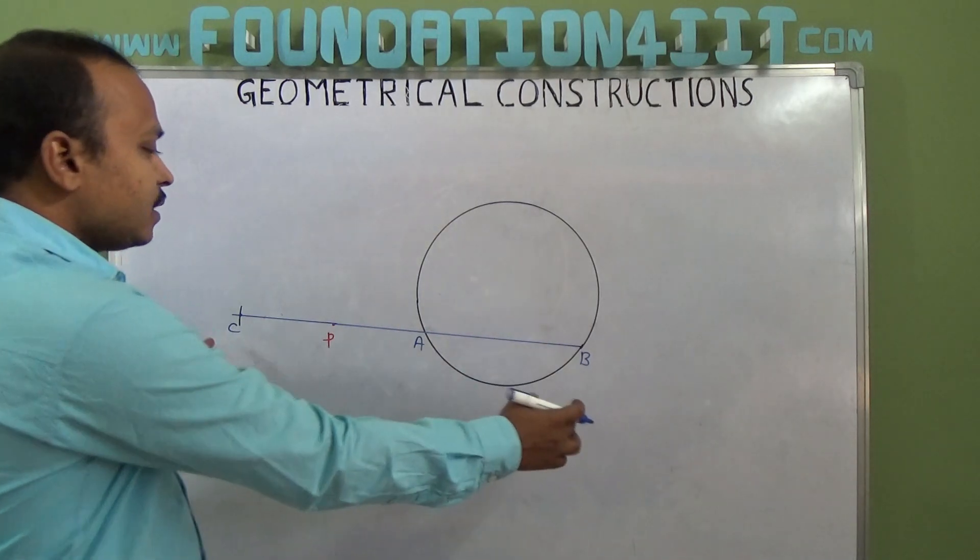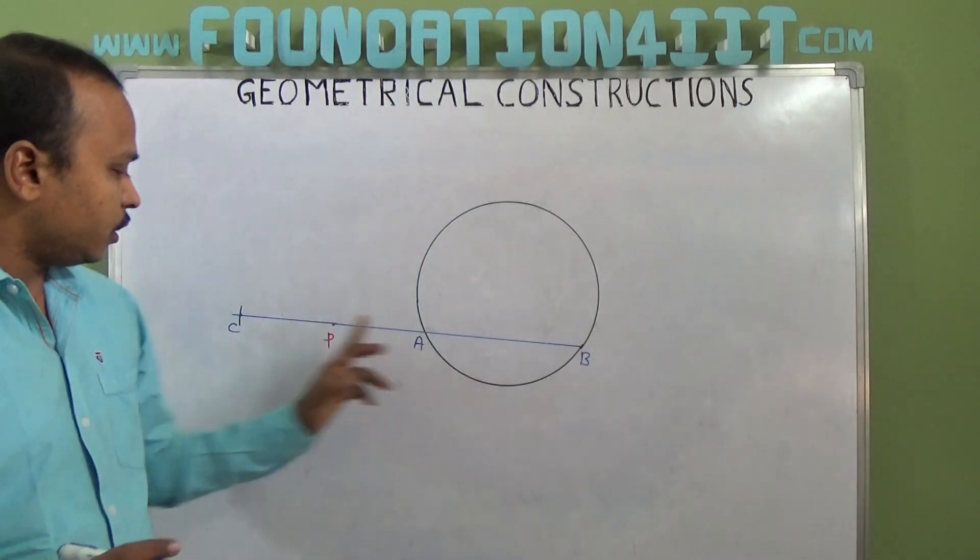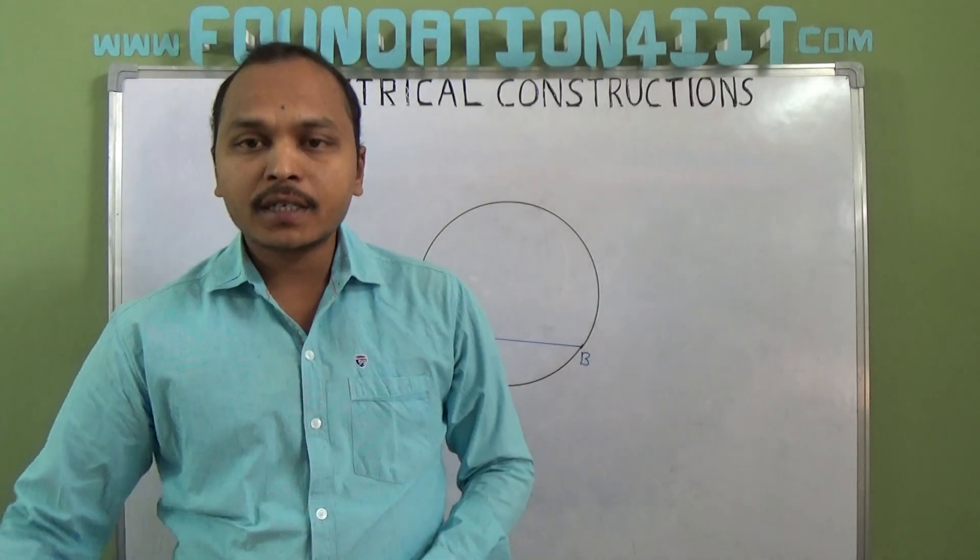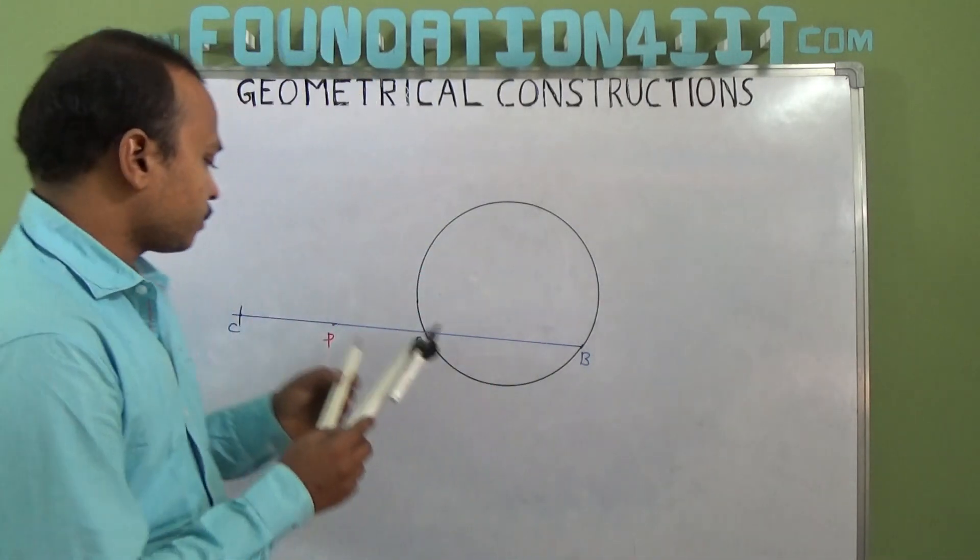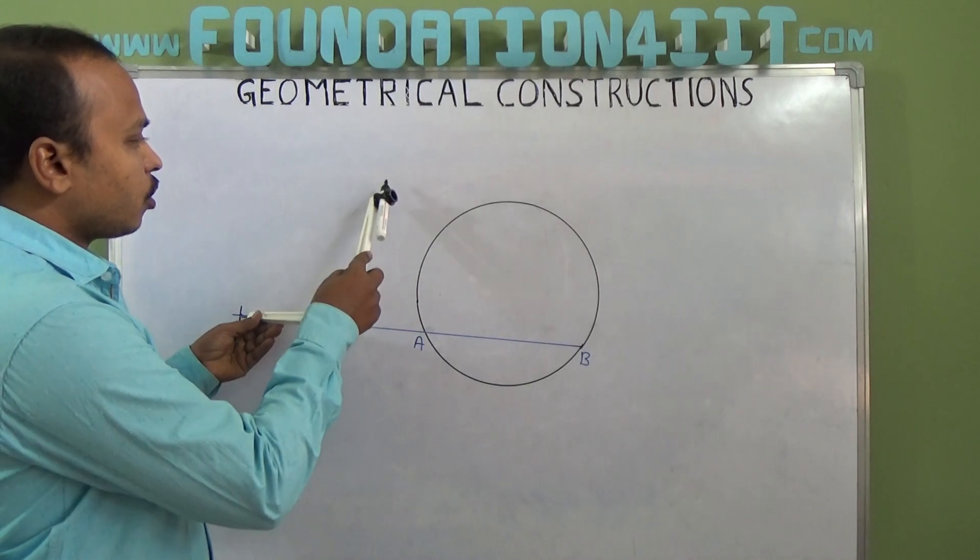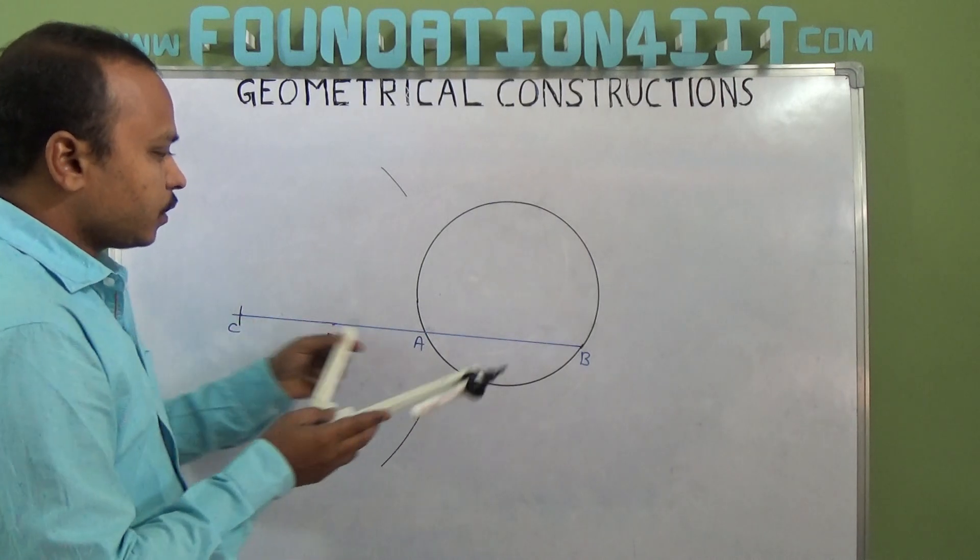Now this BC as the diameter, we need to draw a circle, B to C. BC as diameter, so we need the diameter center point. So from the C, just take more than half, draw an arc above and below, the same from B.